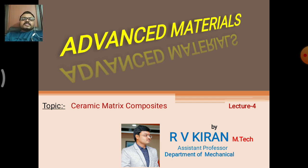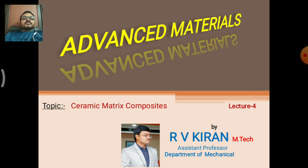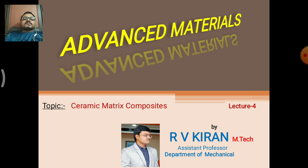In the previous lectures, we have already discussed about the different classification of composites. The first one is the basic classification depending on the type of reinforcements — particle-sized, fiber-reinforced, and structural. In the second type of classification, there are polymer matrix composites, metal matrix composites, and ceramic matrix composites. In the previous lecture, we have seen polymer matrix composites and metal matrix composites.